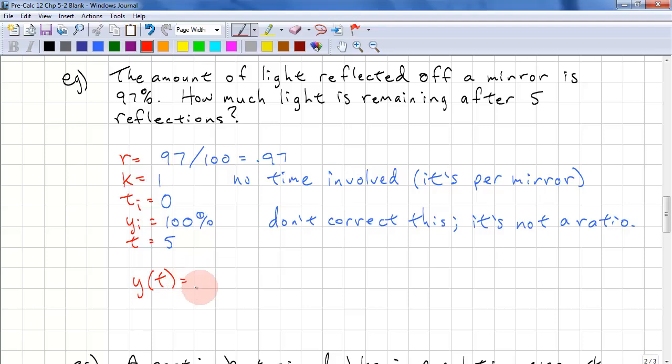So we set this up. y of t equals 100% and our ratio is 0.97 and we just have t because k is 1 and ti is 0. So y of 5 equals 100 times 0.97 to the power of 5, and this is roughly 85.9%. And this is the amount of light after 5 reflections.